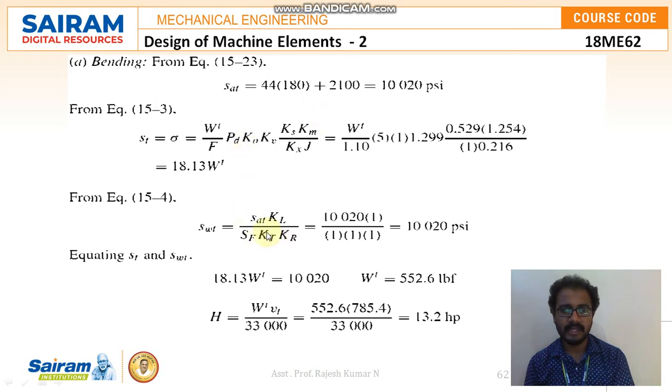Next is SWT. The formula is SAT into KL divided by SF into KT into KL. These are the new formulas which we have not discussed in the previous problems. In case it is asked, you should be knowing how to find out. Here also everything is known. SC value we know, KL value we know, SF, KT, K are everything is 1. So SWT also I am getting the same value as SAT, that is 10020. Then equating SC and SWT where I can find out the W value. I am getting it as 552.6 LBF. Next is H, that is the value is WT into VT divided by 33,000. While substituting WT and VT I am getting H as 13.2 HP.